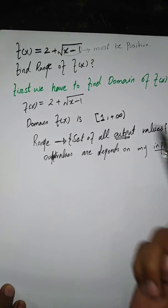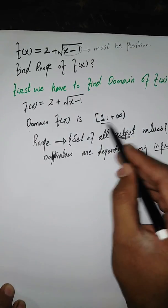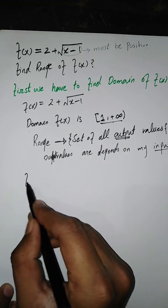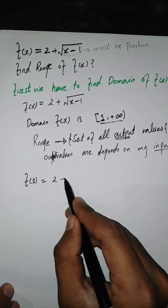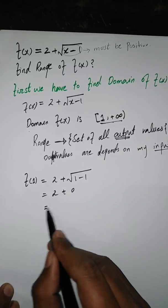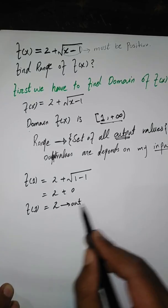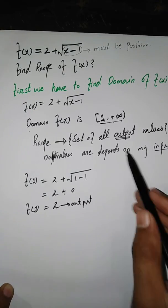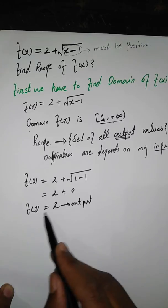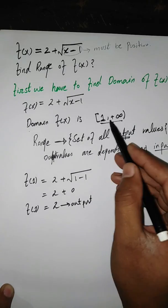First we determine the domain, and then based on the domain we find the range. Our domain means we give inputs to f(x) from that set. The first element of the set is one. When we put one in place of x, we get one minus one equals zero under the radical, which gives two. So two is our first output value and belongs to our range. There is no element smaller than two in our range.